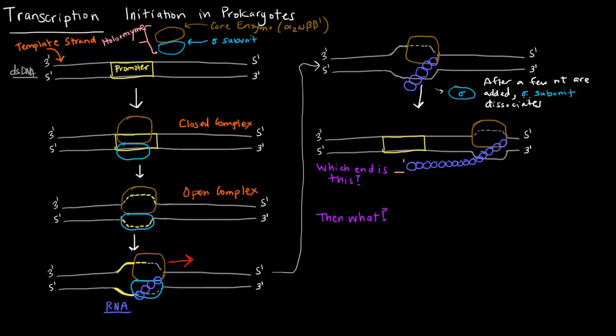Because the sigma subunit was supposed to help the core enzyme bind, and once it gets going, once the core enzyme gets going, the sigma subunit is no longer necessary. So the core enzyme continues on and polymerizes RNA.